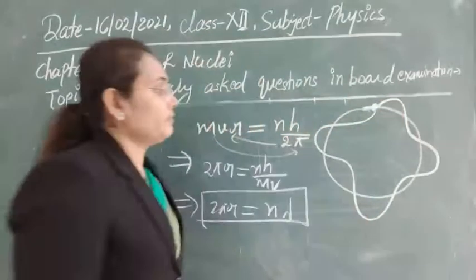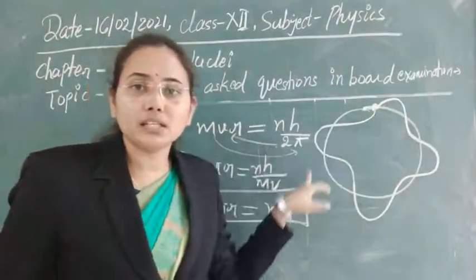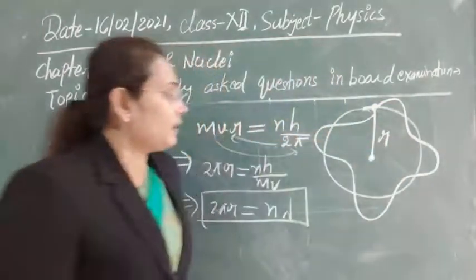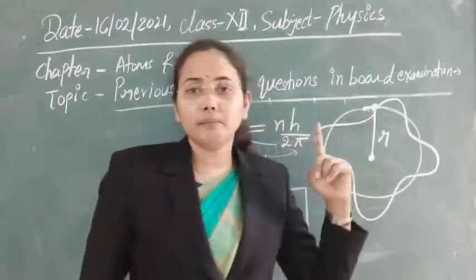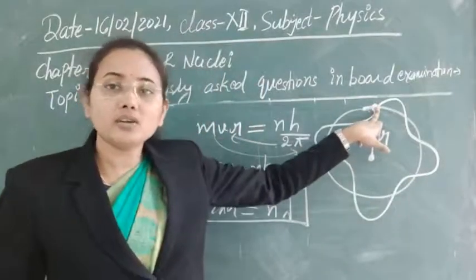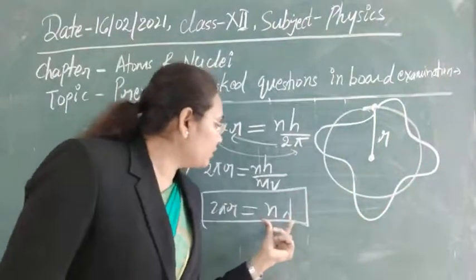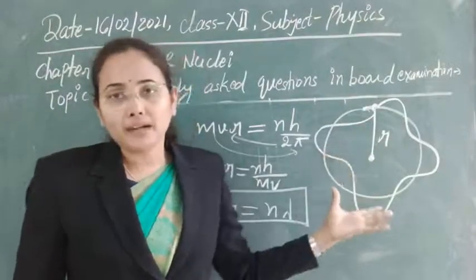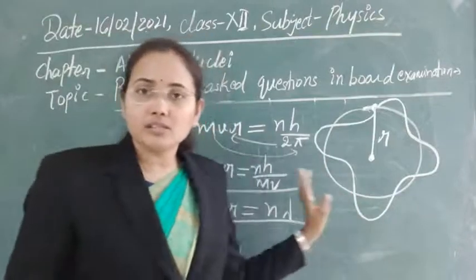Physically, if an electron moves as a wave along its circular orbit, one complete revolution covers a distance of 2πr. If the wave completes n full wavelengths in that distance, then 2πr = nλ. This is the de Broglie concept of wave motion for matter particles, proven using Bohr's quantization condition.